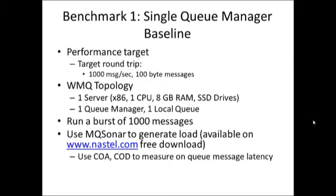For the first benchmark, we're going to establish what we call a baseline. For this specific test, we're going to see if we can achieve a performance target of 1,000 messages per second. We're going to run 100-byte messages. The target system is a single server running one CPU — a four-core machine running about 8 gigabytes of memory with solid-state drives. We'll start with a single queue manager and a single local queue, running a burst of 1,000 messages. For tools, we're going to use MQ Sonar, available at www.nastel.com for free download.